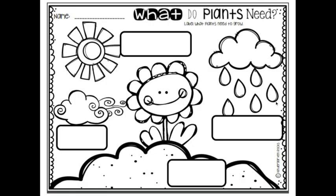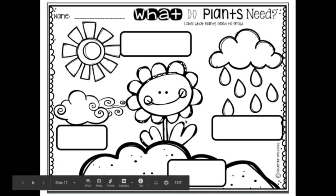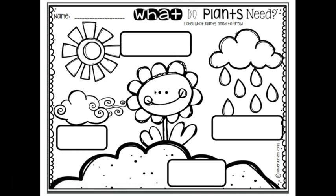This is just a little diagram, and what we would typically do would be to label the things that a plant needs. But unfortunately we can't write in the boxes today. So I'm going to point and hopefully you can tell me what I should be writing in each of those boxes. Okay, you ready? How about here — what would I put in this box? Did you say water? Great job!